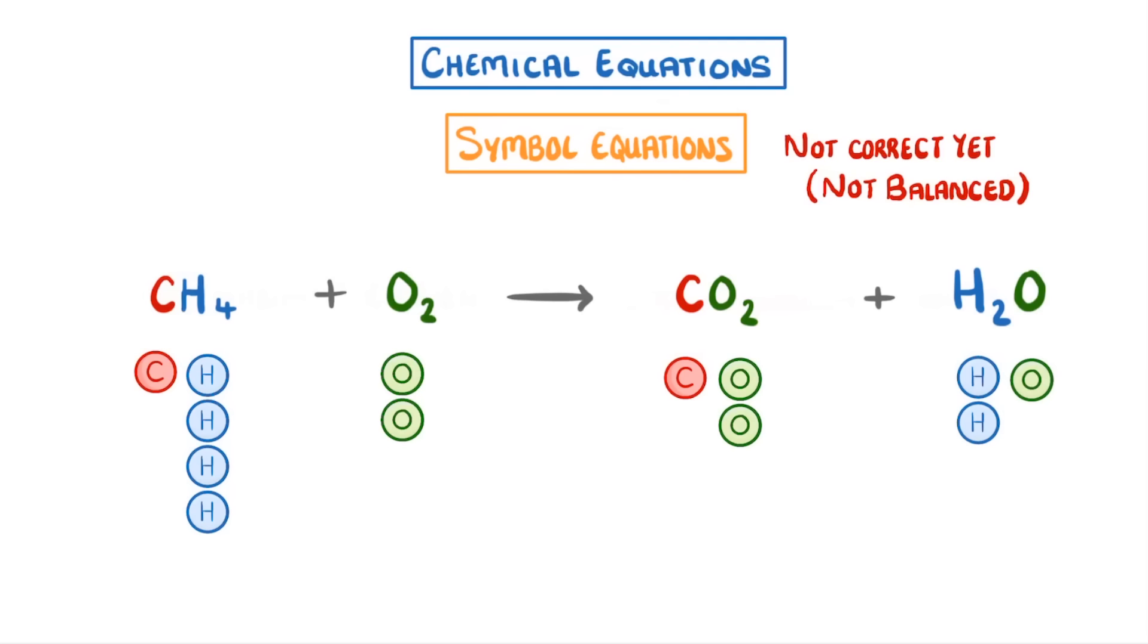Somehow we need to increase the number of oxygens on the left-hand side, and increase the number of hydrogens on the right. Now, it's absolutely fine if you can't work out how to balance it in one go. Often balancing equations is a process of trial and error, where you keep on changing numbers until you get the answer.